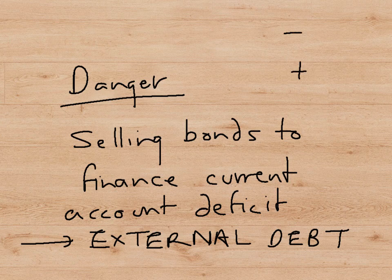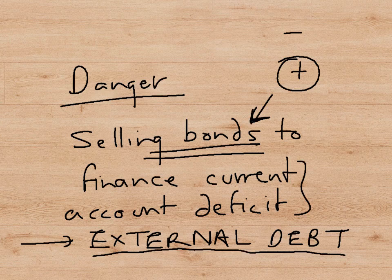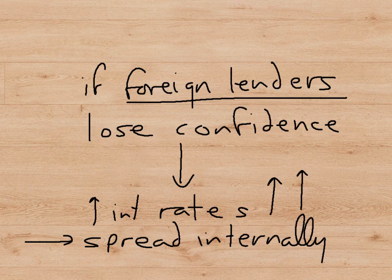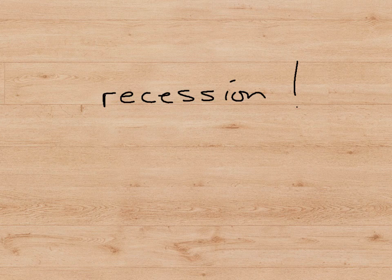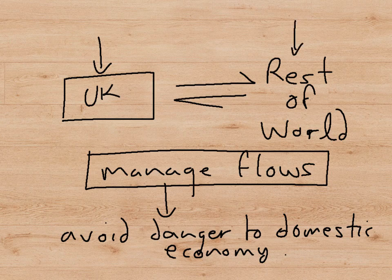However, it can be a problem if the surplus on the financial account is due to selling bonds to finance the current account deficit, because bonds are a form of borrowing. If a country is borrowing from the rest of the world to finance its current account deficit, it is building up an external debt. This may not matter until foreign lenders lose confidence in the economy — they might then increase the interest rates charged on this debt. Rising interest rates will spread internally throughout the economy and may be enough to tip it into recession. It is therefore important to manage the cash flows between an economy and the rest of the world, because if mismanaged, they can be a danger to the domestic economy.